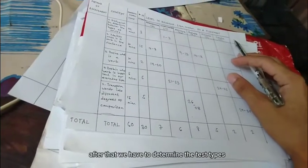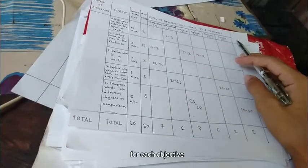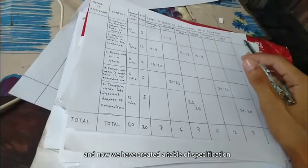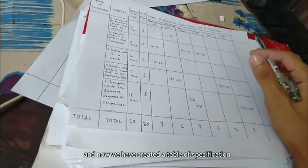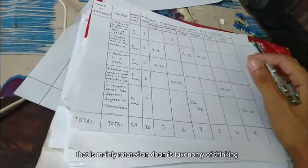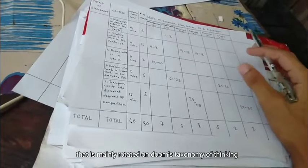After that, we have to determine the test types for each objective. And now we have created a table of specification that is mainly rotated on Bloom's taxonomy of thinking.